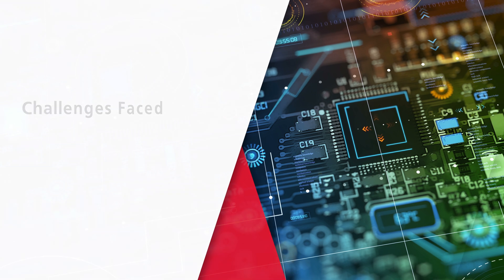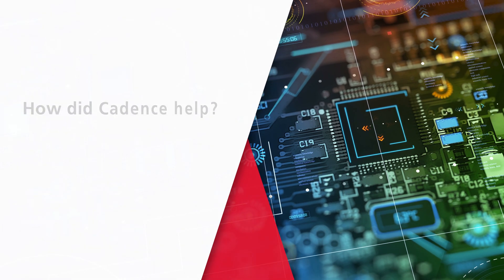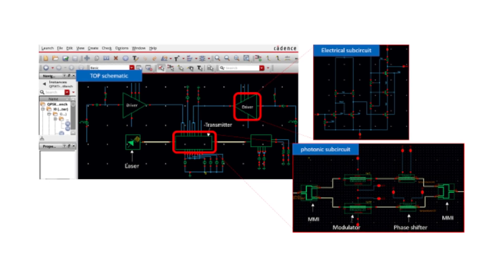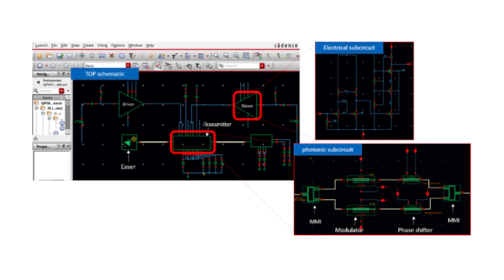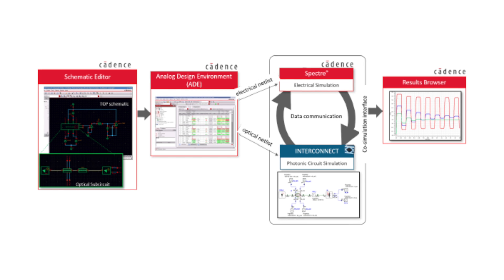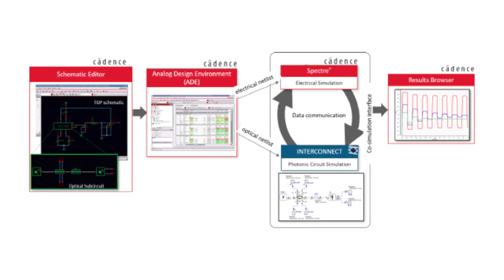The main challenge we see as electronics and photonics start to merge is that you can't independently design a photonic system and an electronic system, then put them together at the end and hope they'll function together. With Cadence we've been able to offer a great solution to this problem: a full design flow driven out of Virtuoso. From one schematic you can do electronic simulation, photonic simulation, and electronic-photonic co-simulation of the entire system, so you can look at all the effects of the interplay between the electronics and the photonics.